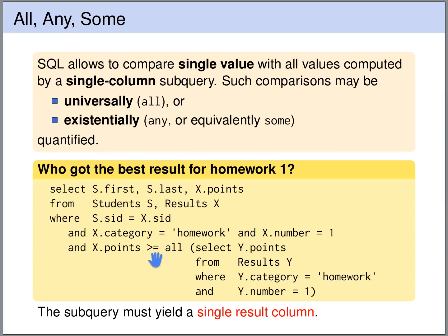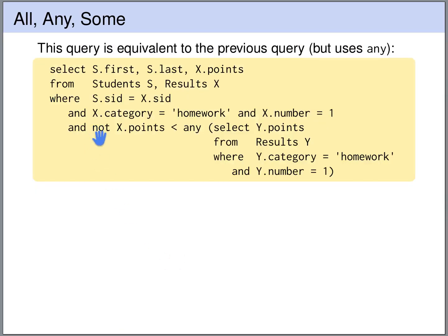This universal quantification greater or equal than all can equivalently be expressed using an existential quantification by writing not smaller than any. So this query will give us the same result.